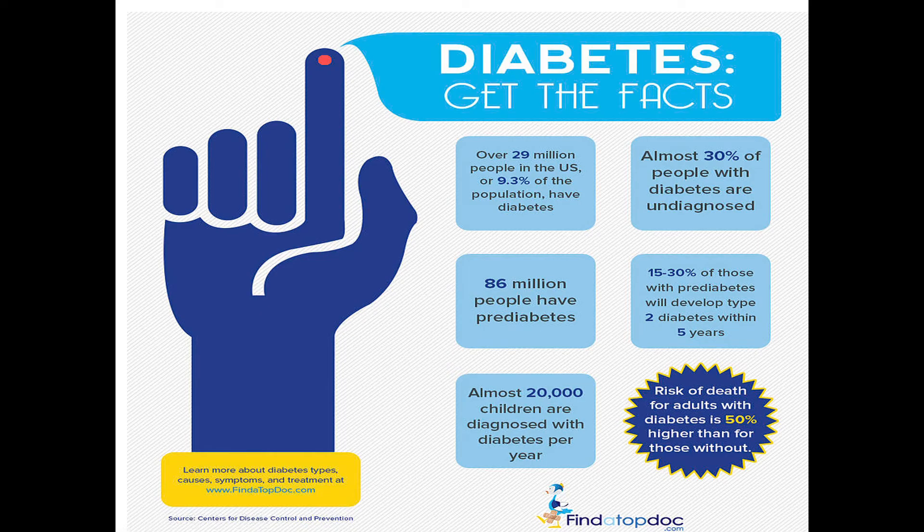Some astonishing diabetic facts from the USA: over 29 million people — 9.3 percent of the population — have diabetes. Almost 30 percent of people with diabetes are undiagnosed. 86 million people have pre-diabetes and may become diabetic in future. 15 to 30 percent of those with pre-diabetes will develop Type 2 diabetes within five years. Almost 20,000 children are diagnosed with diabetes per year. Risk of death for adults with diabetes is 50 percent higher than for those without.